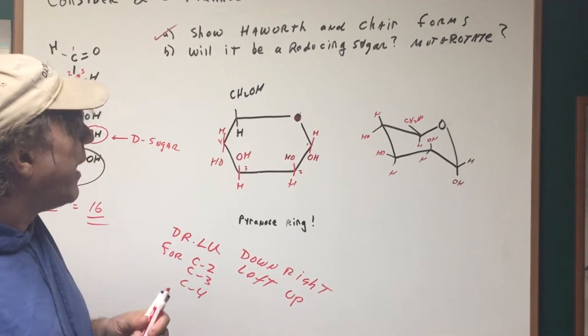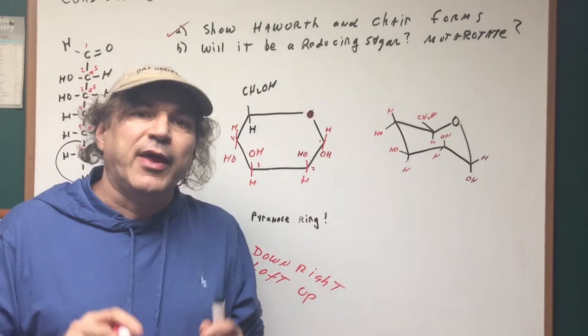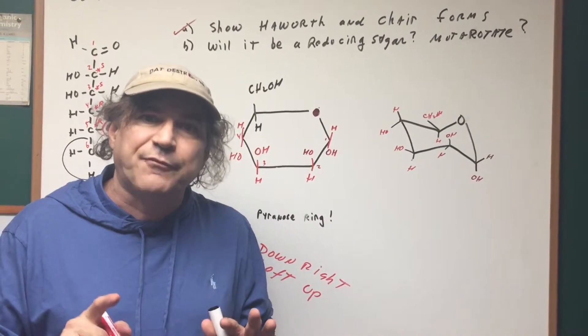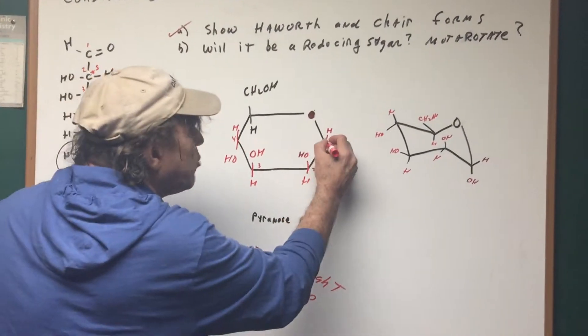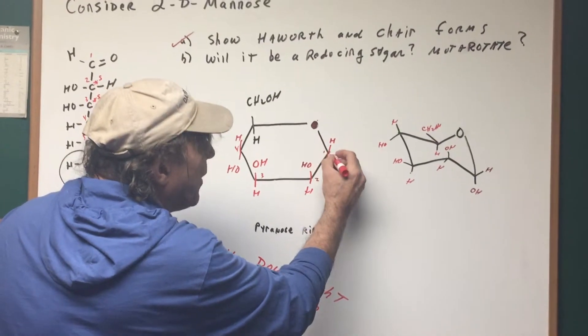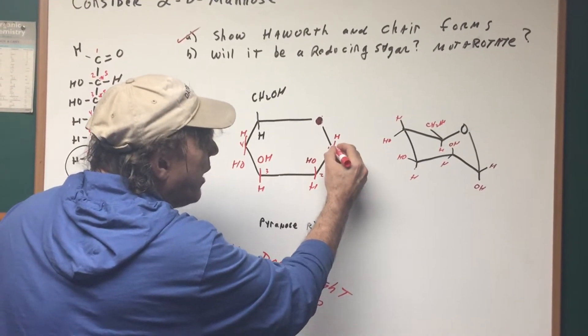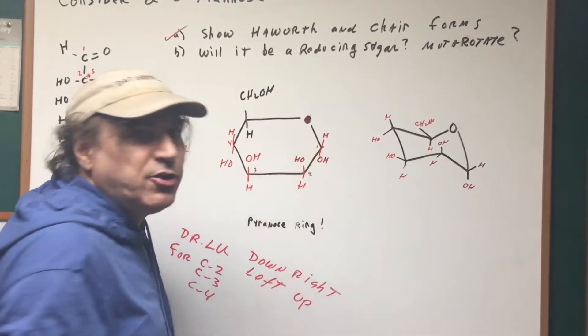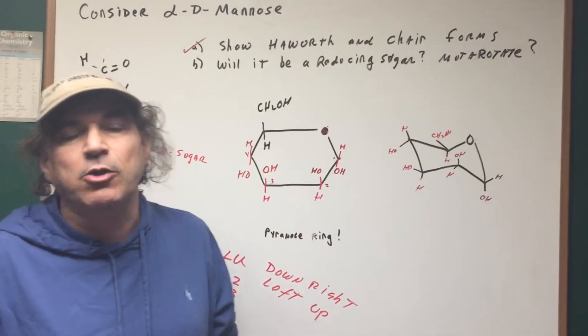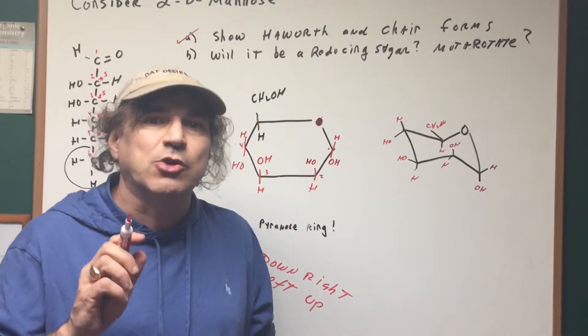The next thing to tell if it's a reducing sugar, you're going to locate the hemiacetal group and see if it exists. And as you can see, right here is a hemiacetal group. It's half alcohol and half ether. The minute you see it's a hemiacetal group, it's a slam dunk. It's a reducing sugar.